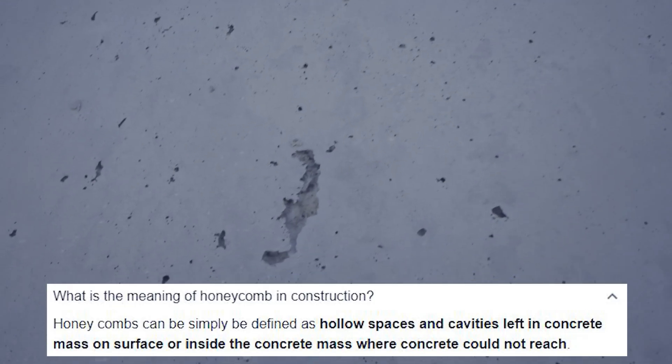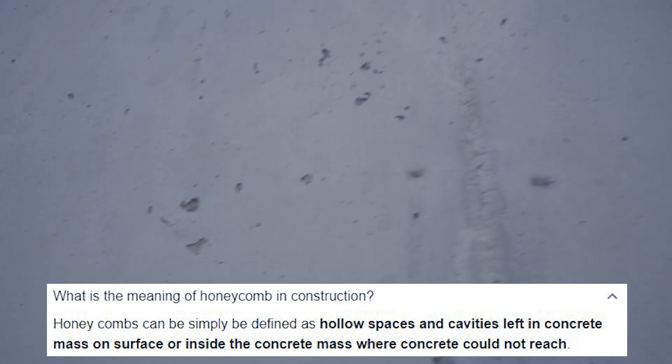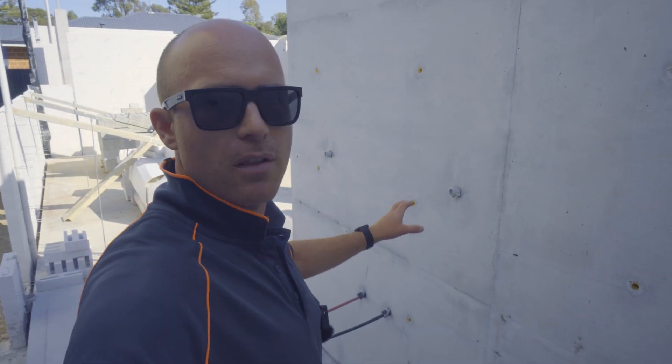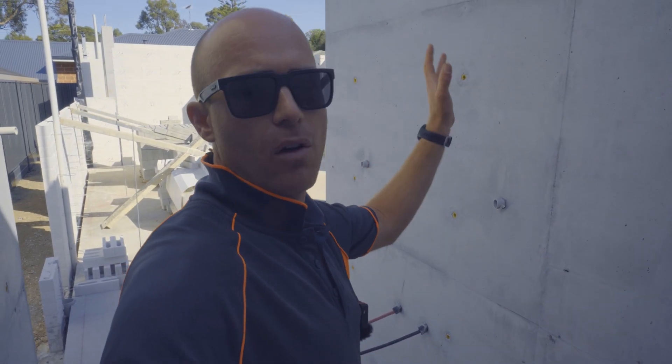That's from not enough vibration. It's quite common for them to be at the top of the walls - you generally don't get them on the bottom because the hydraulic pressure and the weight of the concrete forces all the air to the top. Some of these little air bubbles are quite common. We try to get them out - we use a jackhammer on the outside, and we also vibrate the wall with a vibrator, but you can't avoid all of it.